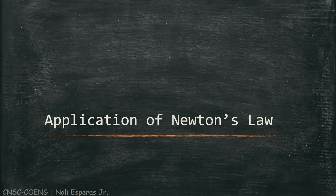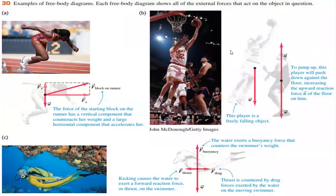A free-body diagram is a diagram showing the chosen body by itself, free of its surroundings, with vectors drawn to show the magnitudes and directions of all the forces applied to the body by the various other bodies that interact with it.